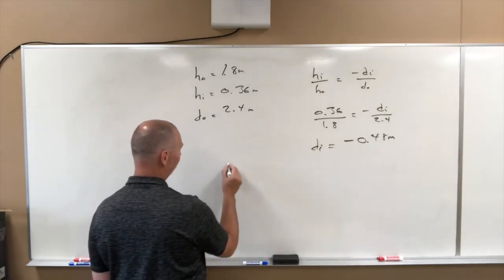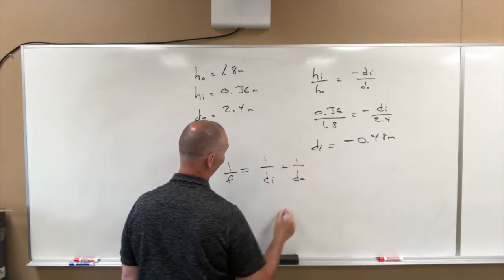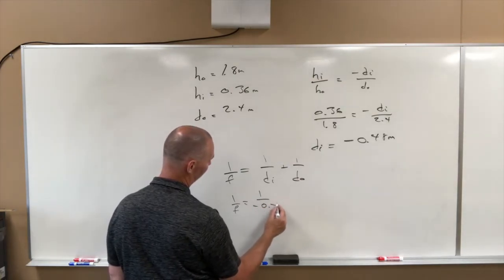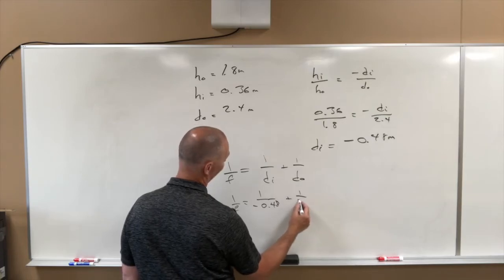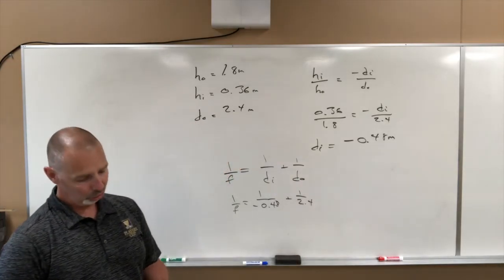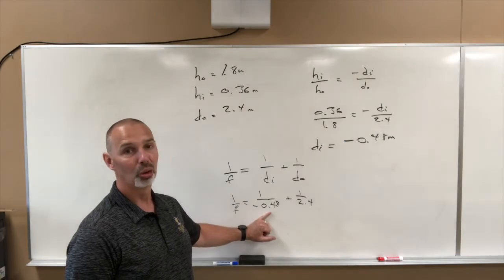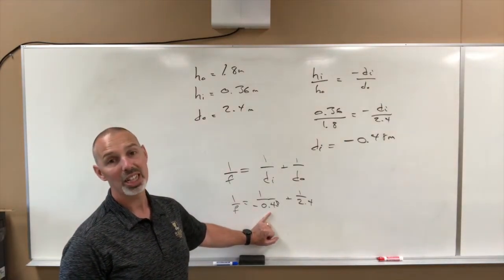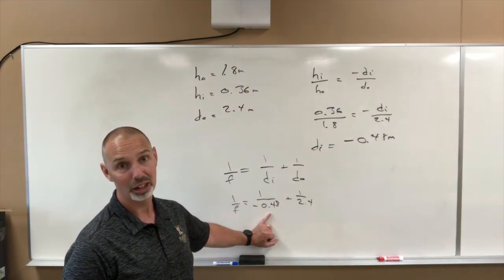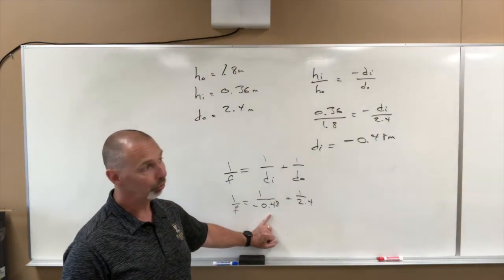Now we have to use our formula again, our mirror formula. We're going to go 1 over F equals 1 over negative 0.48 plus 1 over 2.4. Now this is where it gets tricky. If you're trying to use your calculator for this and punching this in as a fraction, this will not give you an answer. Your calculator is not smart enough to put a decimal into a fraction because that's really a bad mathematical don't do. You can't have decimals in fractions. You either have decimals or you have fractions.